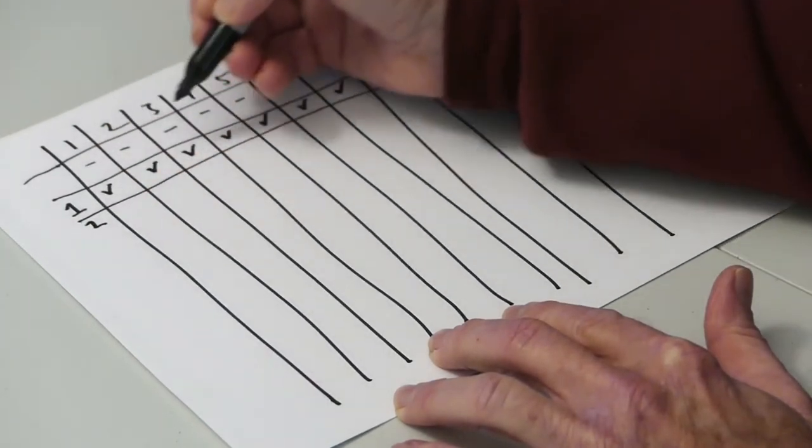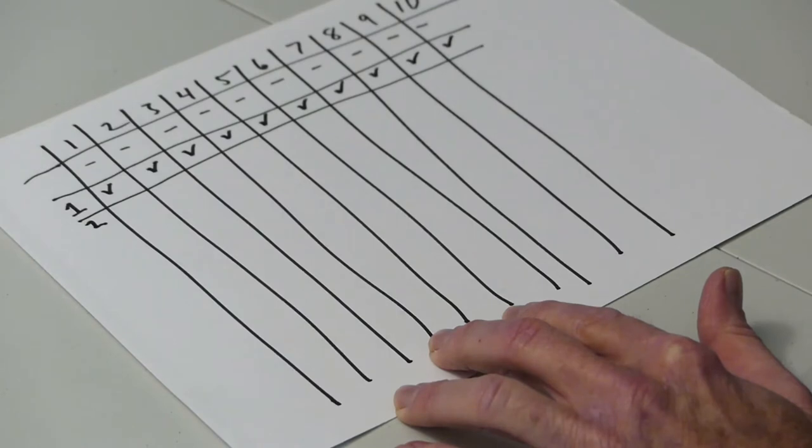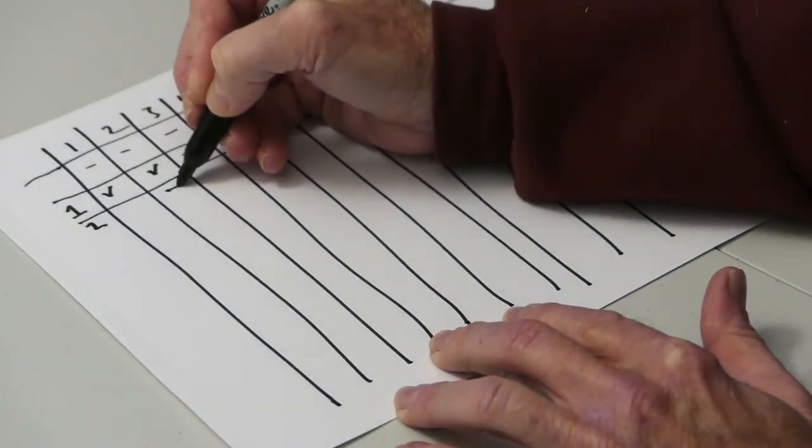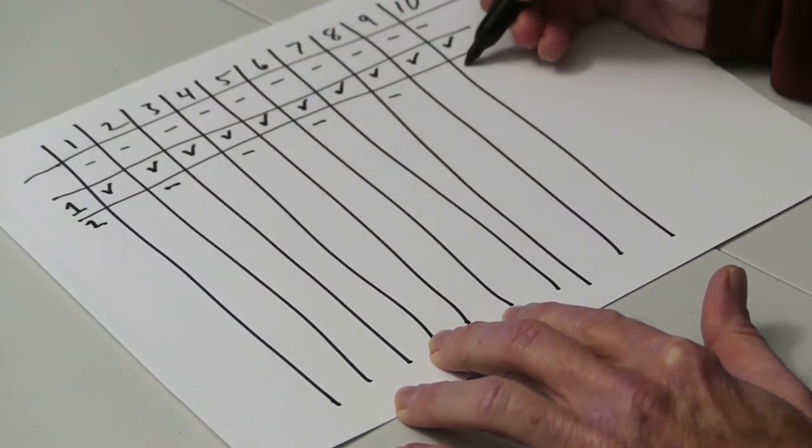Student number 2 comes in, starts at locker number 2, and switches the status of every other locker. That means they'll close lockers 2, 4, 6, 8, and 10.